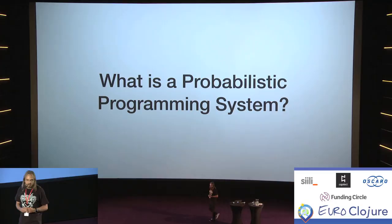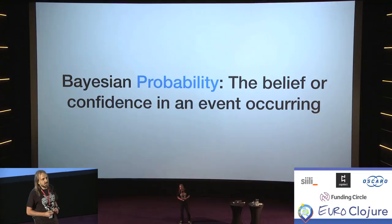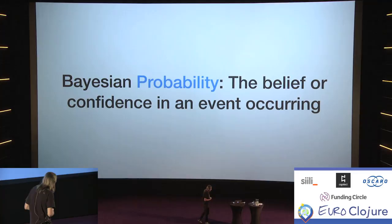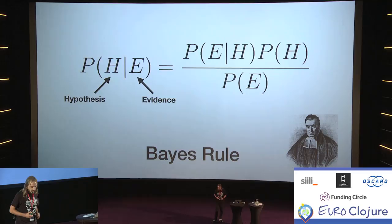So what is probabilistic programming? Let's start with the very basics: probability. When I talk about probability here, I mean Bayesian probability — your belief or confidence that an event is occurring. For those with training in frequentist statistics, you might have a different view on probability, but this is what I'm talking about here. Using Bayesian statistics, there's one central rule: Bayes' rule, shown here.